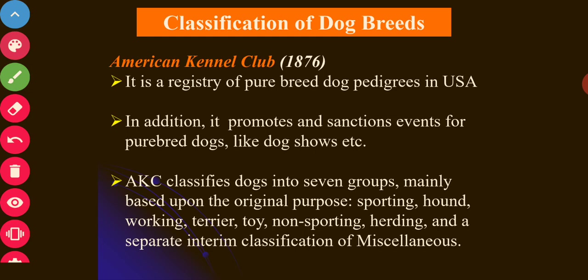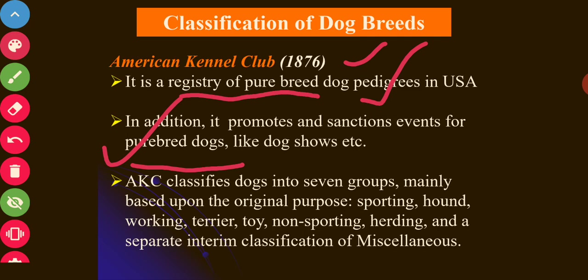The most accepted classification is done by the American Kennel Club. The American Kennel Club was established in 1876 in the USA. It is a registry of pure breed dog pedigrees in the USA. In addition, it also promotes various events for dogs like dog shows and dog competitions.